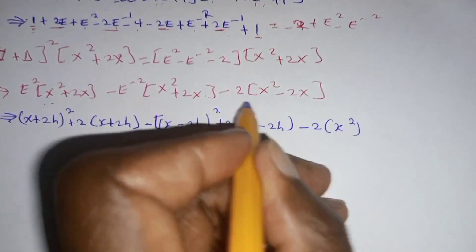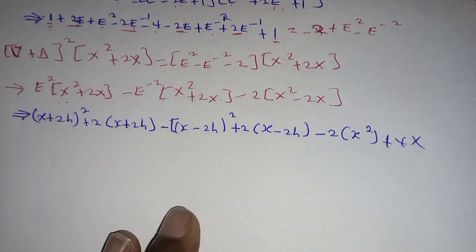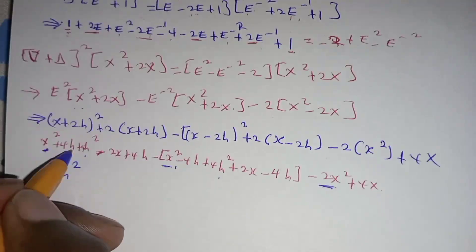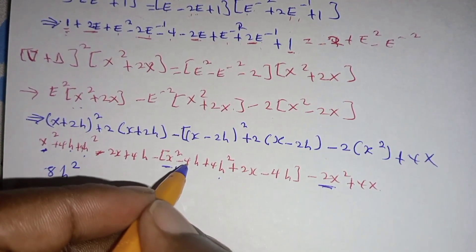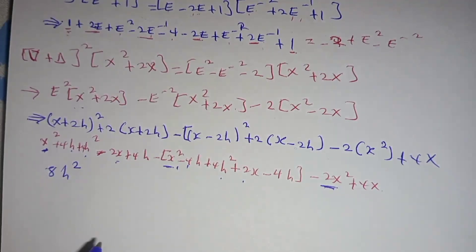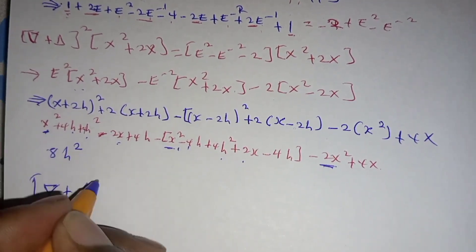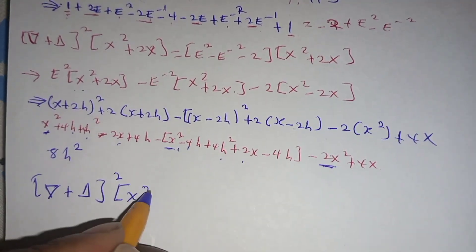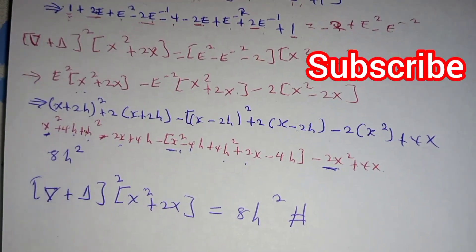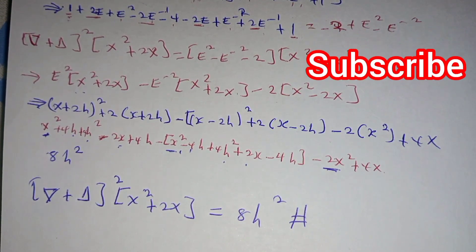So x squared gives plus four x from there. Now we can expand this part. This has four and eight which will cancel out, and you have two x. This other two x will cancel out as well, meaning that now the backward difference plus one, the whole squared, multiplied by x squared plus two x, the result is equal to eight. Thanks so much for taking your time to study with me. Tune in to my channel so that we may learn together. Bye bye for now, see you in the next presentation.